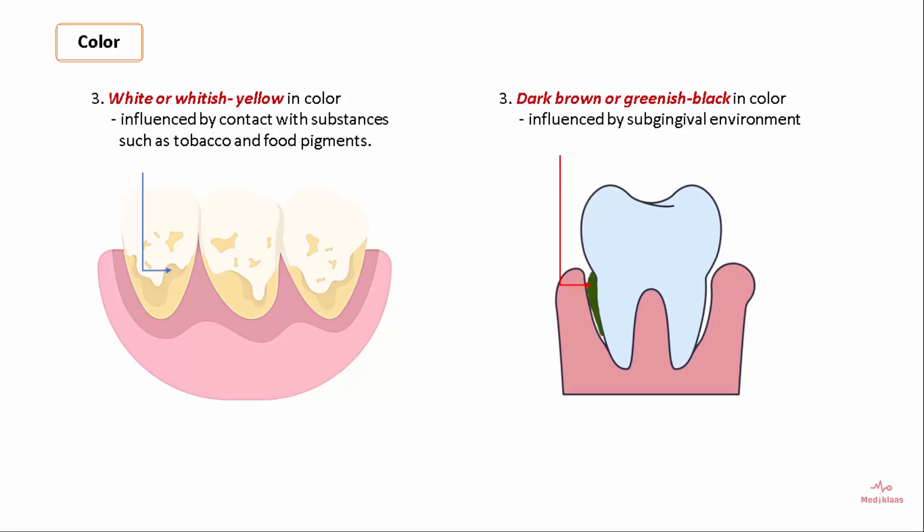Coming to color, supragingival calculus is white or whitish-yellow in color and is influenced by contact with substances such as tobacco and food pigments. Subgingival calculus appears dark brown or greenish-black in color, influenced by the subgingival environment.